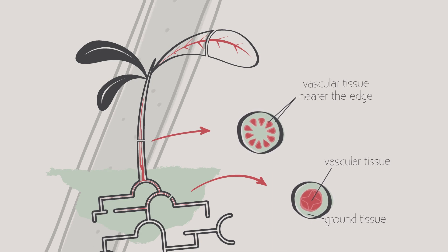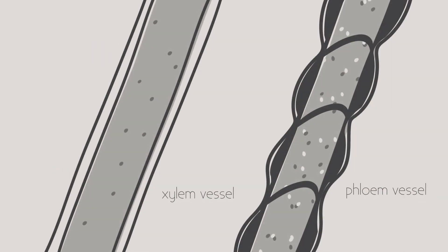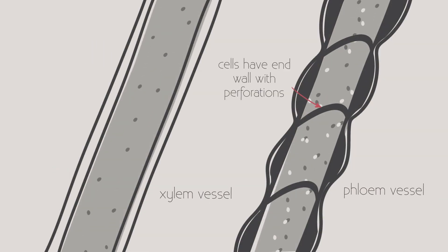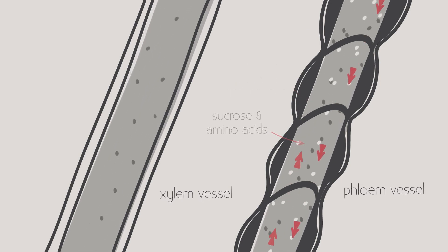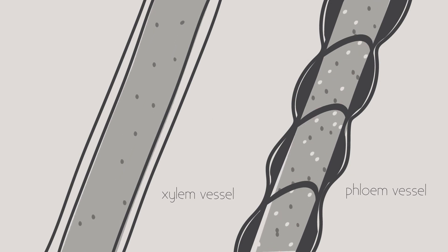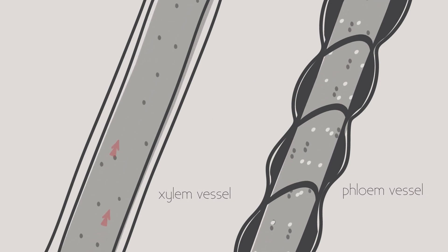Phloem vessels are made up of living cells. They transport sucrose and amino acids up and down the plant depending on where they are needed, whereas in the xylem the movement is just one way from the roots up to the leaves.